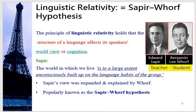Another linguistic approach is called linguistic relativity. The principle of linguistic relativity holds that the structure of a language affects its speakers. Looking at the two persons on the right side — Edward Sapir and Benjamin Lee Whorf — Sapir is the teacher and Whorf is his student. Sapir's view was that the world in which we live is to a large extent unconsciously built up on the language habits of the group. This view was expanded and explained by Whorf, popularly known as the Sapir-Whorf hypothesis.